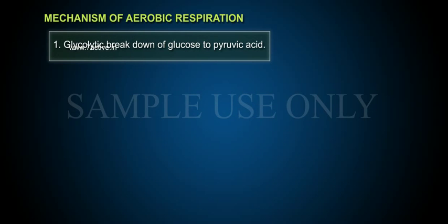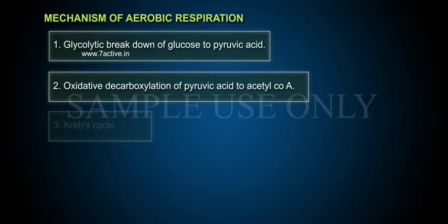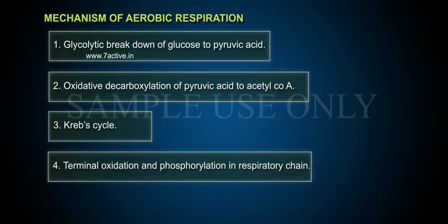The four major steps are: 1. Glycolytic breakdown of glucose to pyruvic acid. 2. Oxidative decarboxylation of pyruvic acid to acetyl-CoA. 3. Krebs cycle. 4. Terminal oxidation and phosphorylation in the respiratory chain.